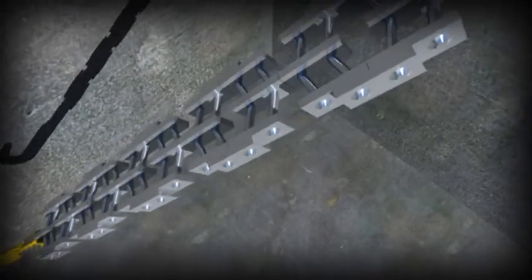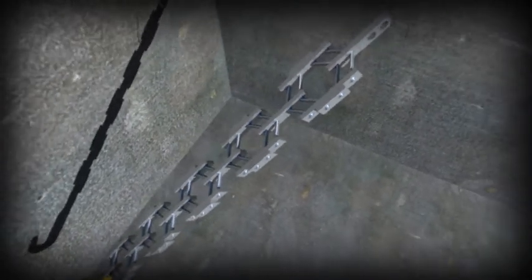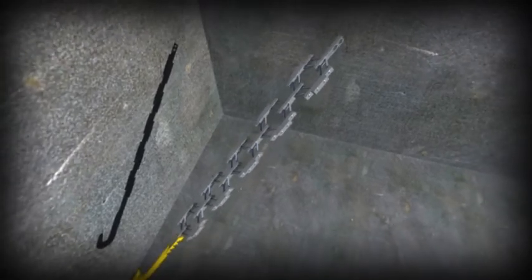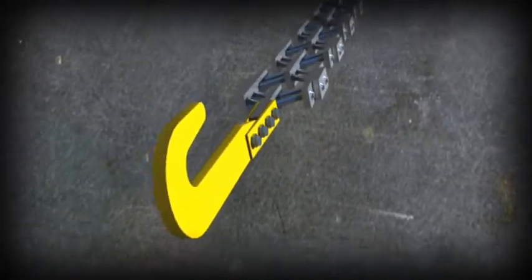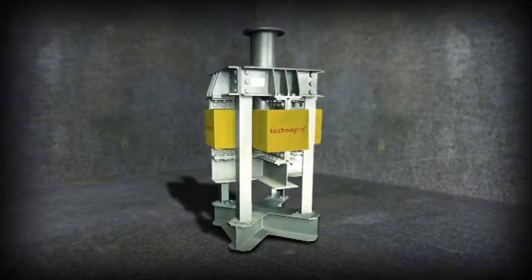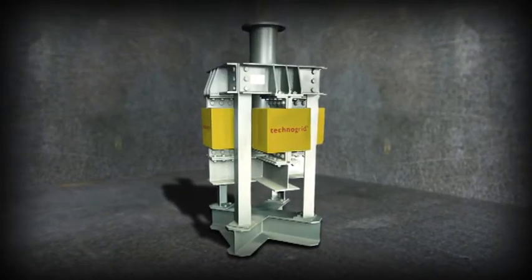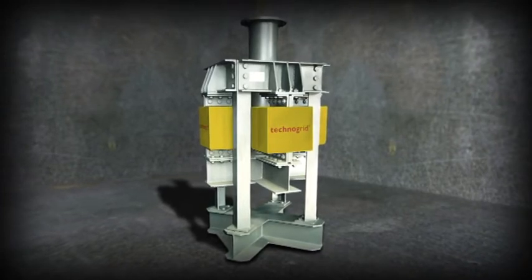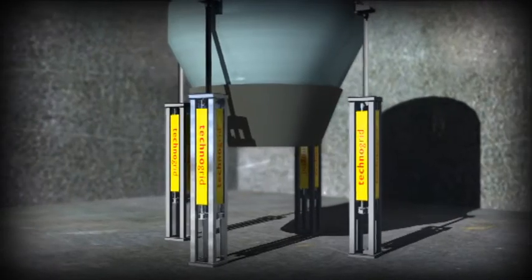Technogrid can absorb any impact as long as the crash or catch framework is designed to put the grids into tension. Here, for example, we see a simple hook and here a combination of compression legs to absorb the energy from granulation tank explosions or bin and silo collapses.